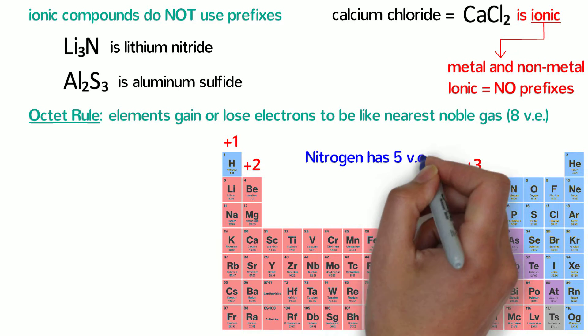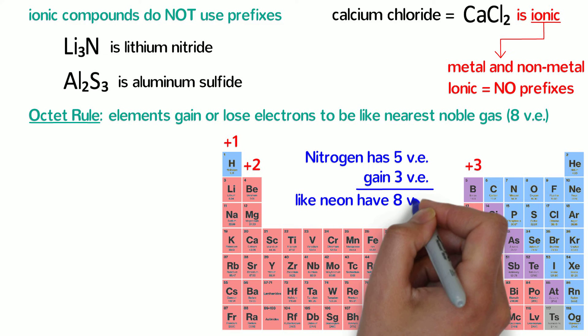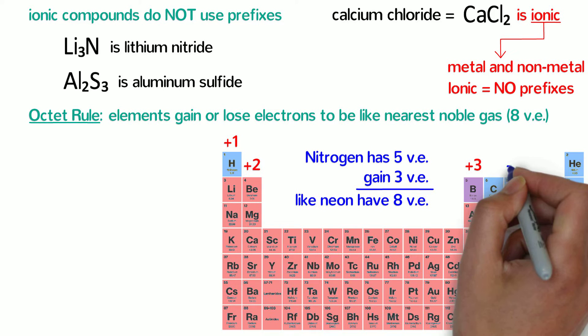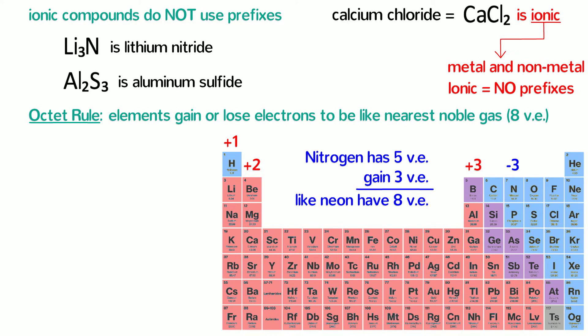Nitrogen has 5 valence electrons so it will gain 3 electrons to become like neon and have 8 valence electrons. Because electrons are negatively charged, those 3 electrons give nitrogen a negative 3 charge. Similarly, oxide has a negative 2 charge and fluoride has a negative 1 charge. In general, all elements within a column will form the same charge ions unless you cross the metalloid staircase.